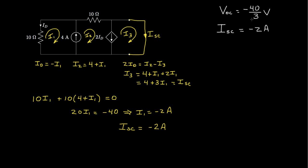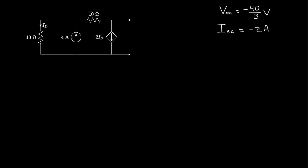Now I'd like to show you another way of finding the Thevenin resistance by determining the equivalent resistance of this circuit, and show that you get the same answer. To determine the equivalent resistance, we first remove the terminals, set the independent current source to zero by replacing it with an open circuit, and look back into this circuit to determine the equivalent resistance.